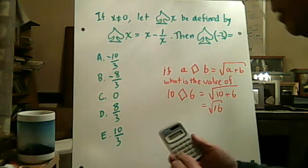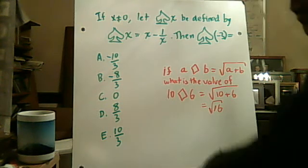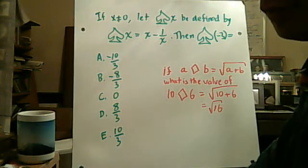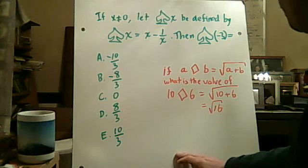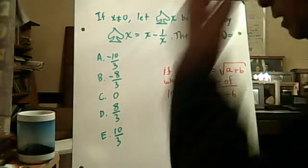You should recognize 16 as 4 squared. In any case, if you had multiple choice, 4 would be one of them because it's the correct answer, so you wouldn't actually have to calculate that. You can just check: 4 squared equals 16. Okay, just an example.